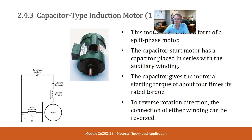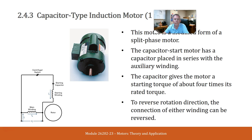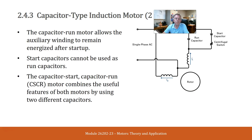On a capacitor type induction motor, this motor is a modified form of a split phase motor. The capacitor start motor has the capacitors placed in series with the auxiliary windings. The capacitor gives the motor a starting torque of about four times its rated torque. To reverse rotation, the connection of either winding can be reversed. The capacitor run motor allows the auxiliary windings to remain energized after startup. Start capacitors cannot be used as run capacitors. The capacitor start, capacitor run — or CSCR — motor combines the useful features of both motors by using two different capacitors.